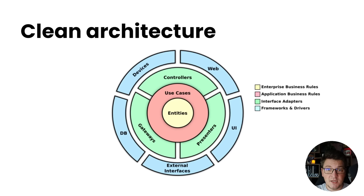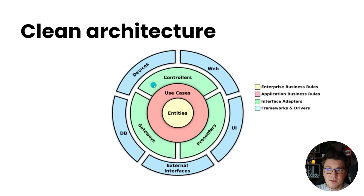In many ways clean architecture is just a repackaging of older architectural approaches such as the hexagonal and the onion architecture, which is why you're going to see many of the same concepts duplicated. At the core of the clean architecture you have your entities, which is also the same as the onion architecture. The entities contain the enterprise business rules. On top of the entities you have your application use cases, which contain the application business rules and orchestrate the domain entities to perform the business logic.